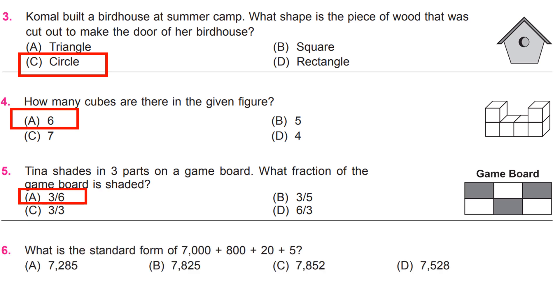What is the standard form of 7000 plus 800 plus 20 plus 5?